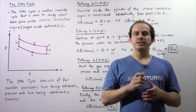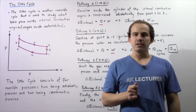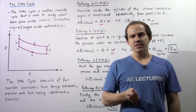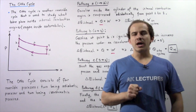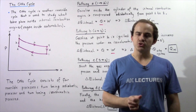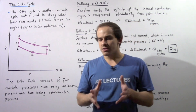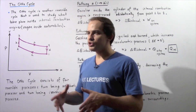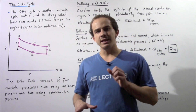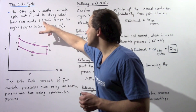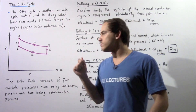Let's discuss yet another example of a reversible cycle known as the Otto cycle. Just like the Carnot cycle, the Otto cycle consists of four reversible processes. Two of those processes are isovolumetric, and two of those processes are adiabatic. We study the Otto cycle to gain more understanding into what takes place inside certain heat engines known as internal combustion engines — the engines found inside automobiles.